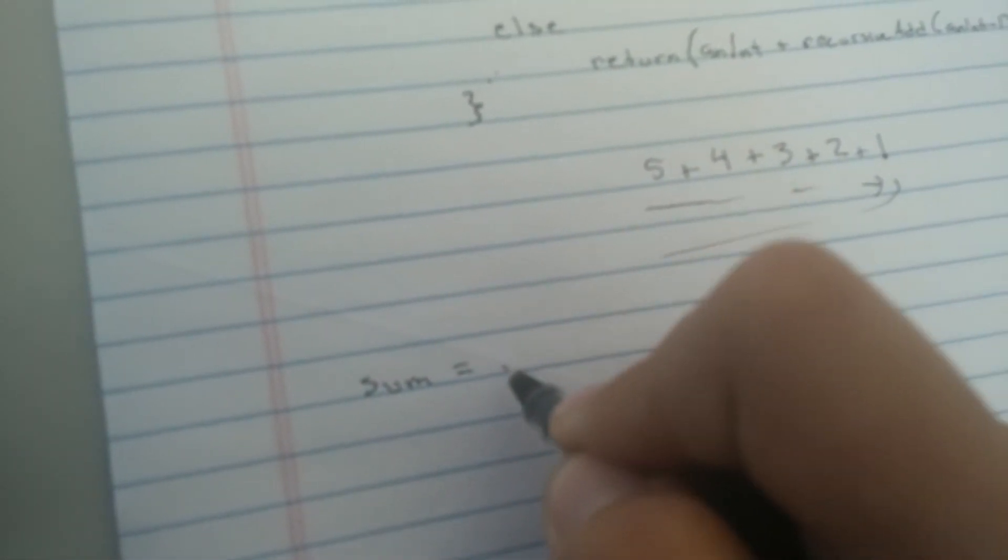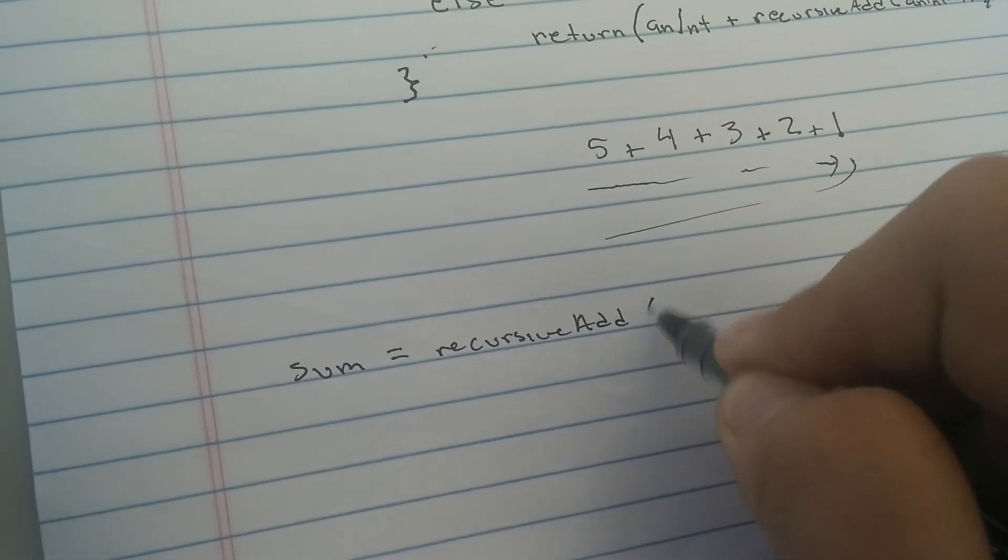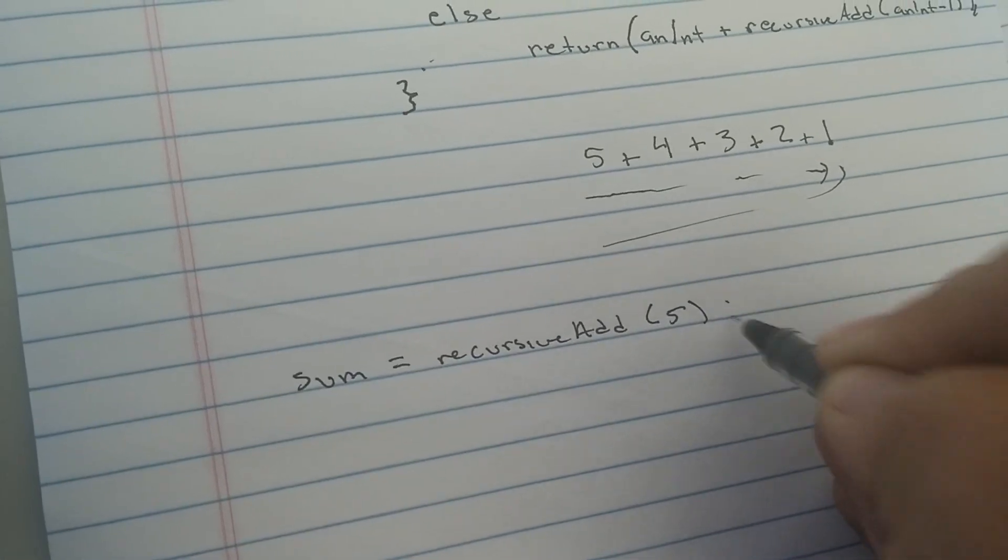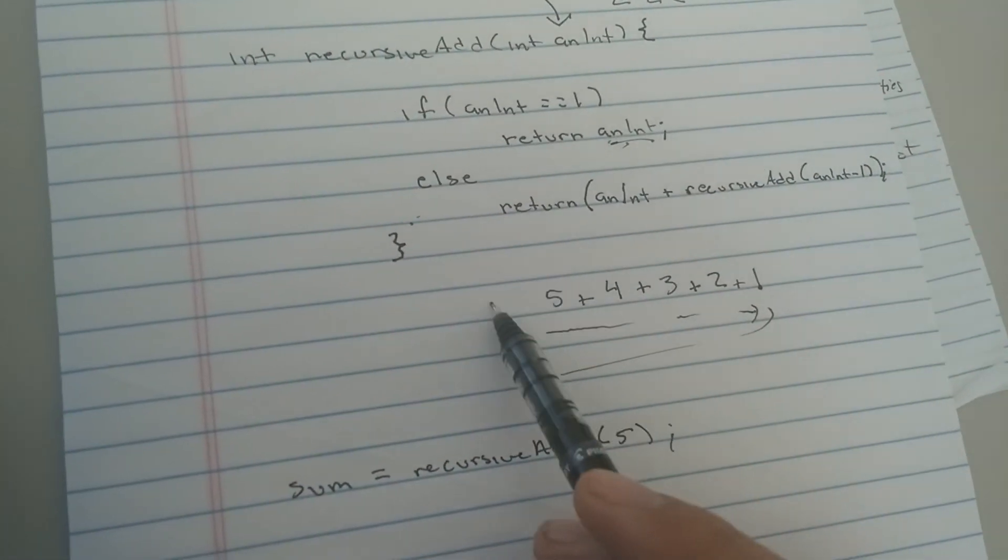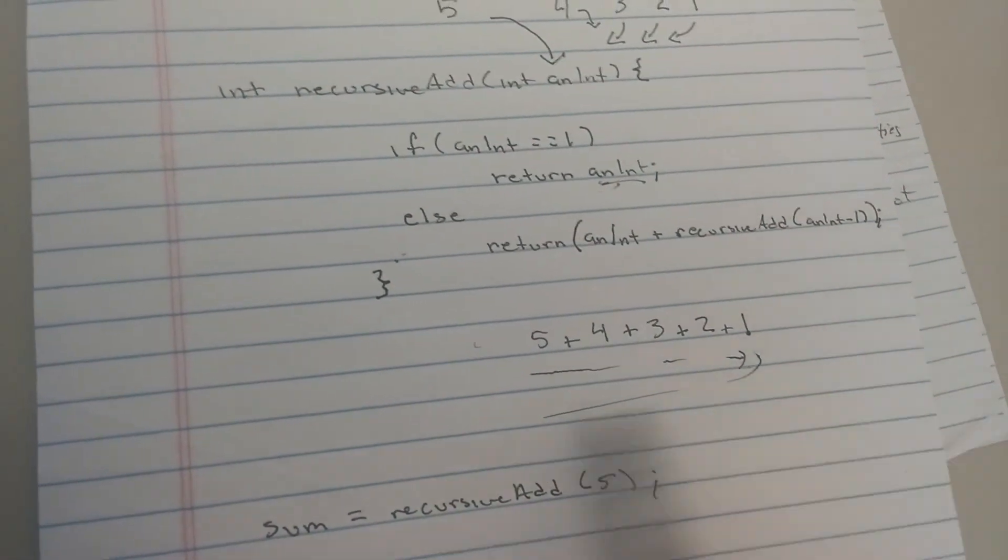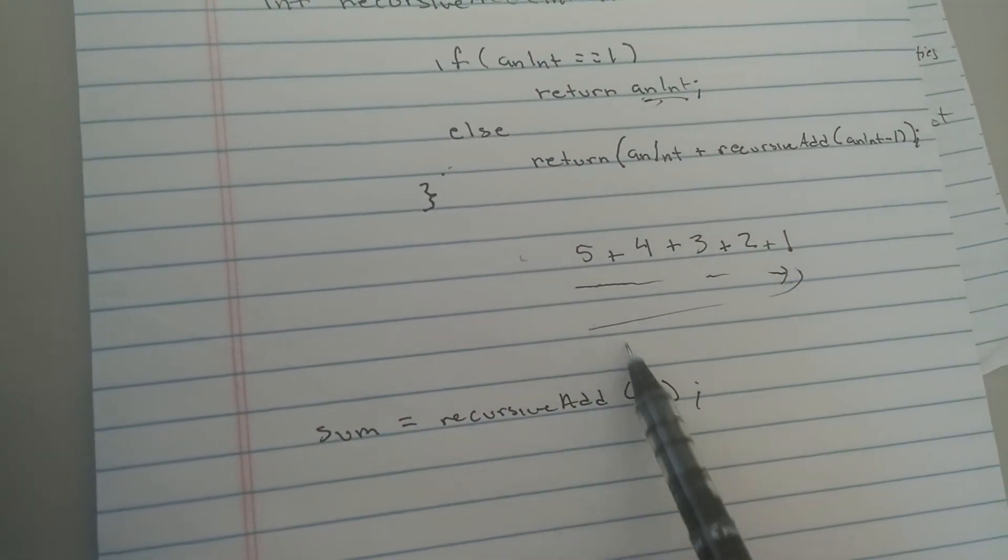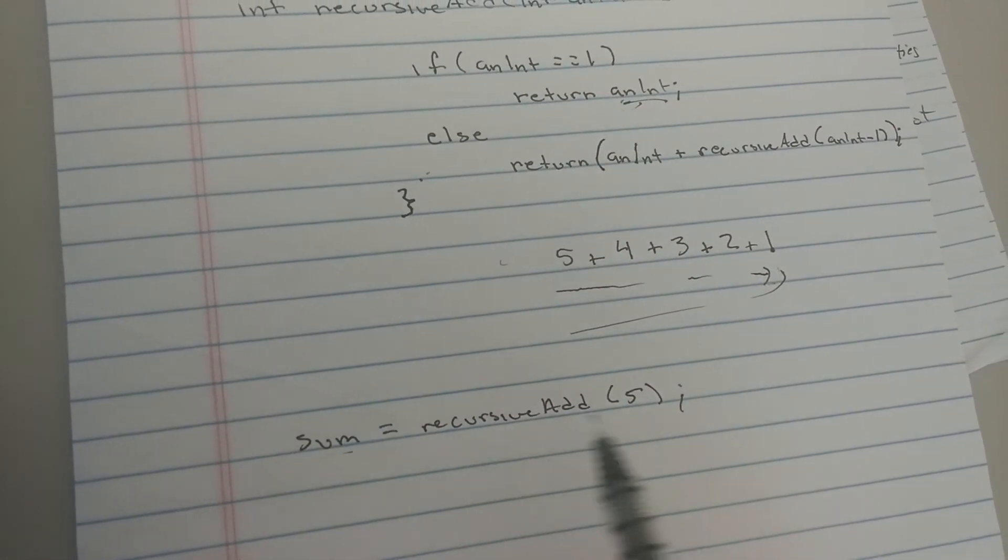So, if we had just said sum equals recursive add of 5. Then, as soon as sum gets called, it would start going through this process, and it would build this stack, hit the 1, and bounce back through, and return the sum of all these values into the variable sum.